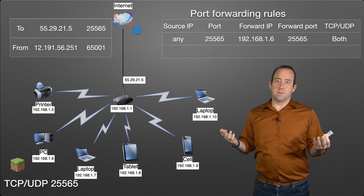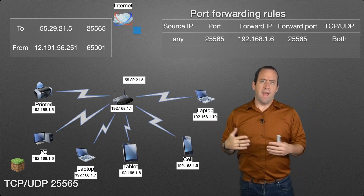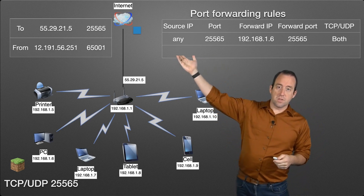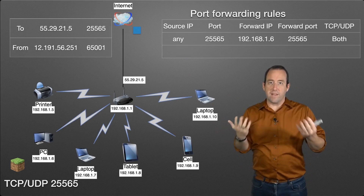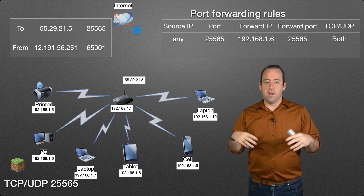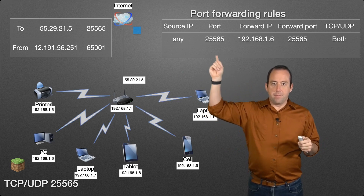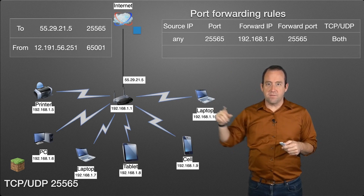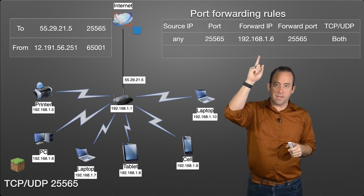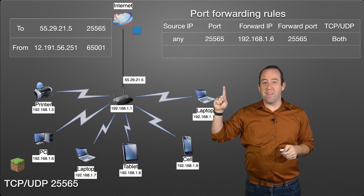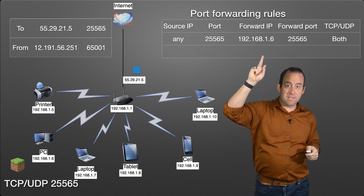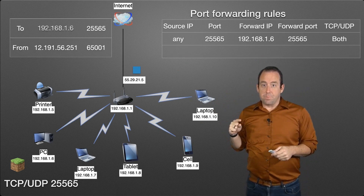To fix this, we have to tell the router: when traffic comes in on port 25565, send it to the device running the Minecraft server. We set up port forwarding rules — pretty much every consumer and commercial router supports these. You can specify the source IP address (we'll say 'any' since we don't know who will connect), the incoming port 25565 for TCP and UDP, and forward it to 192.168.1.6 on port 25565. Now when that packet arrives, the router checks its rules and forwards it accordingly.